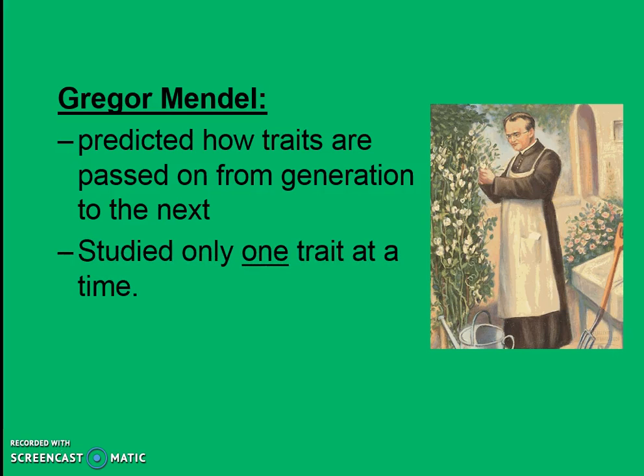He only studied one trait at a time, so sometimes he looked at the height of pea plants. When he was looking at height, he wasn't also looking at the flower color. If he looked at flower color, he did that in a second different experiment. So his experiments were very controlled, looking at only one trait at a time as they passed on those traits from parent plant to offspring plant.